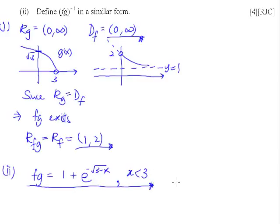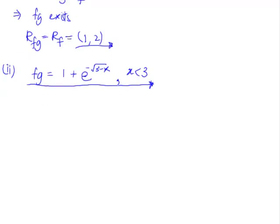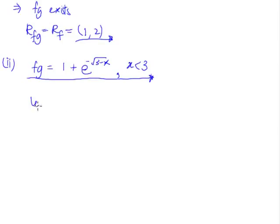What we need to do is find fg's inverse. Since the question wants us to find fg's inverse, what we can do is, of course, you can try to plot this out using a gc and see if this is a one-to-one function. Or what you can do is you can simply assume that it exists since the question wants us to find. So let's make some space to find the inverse of our fg. So what we do is, we let y. Same thing. So we let y equals to 1 plus e to the power of negative square root of 3 minus x.